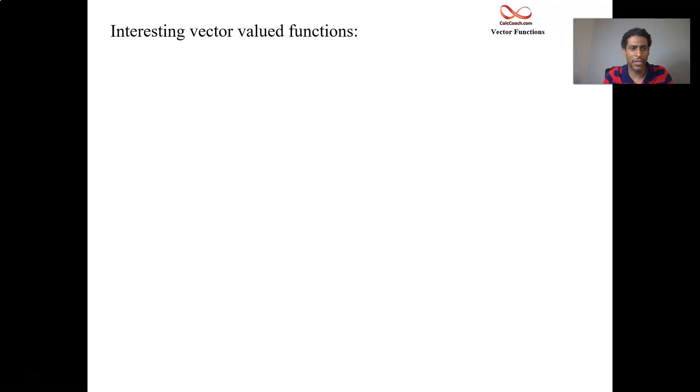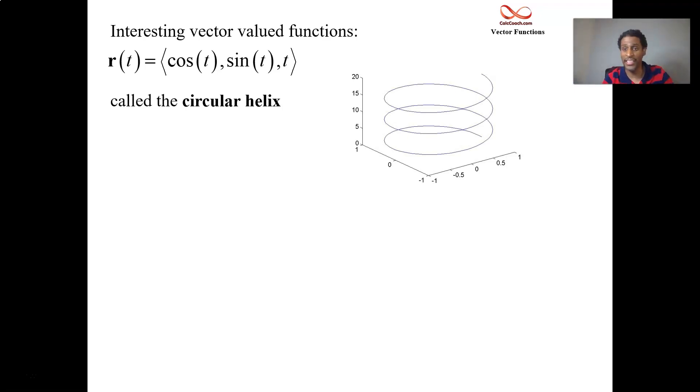First up is to look at some common vector functions. What we have here is cosine t as the function f of t and sine t as the function g of t and t as the function h of t. So sine and cosine with x and y, that's circular, but t is going to be increasing or maybe even decreasing. So the height above the xy plane is going to be moving. It's called a circular helix.